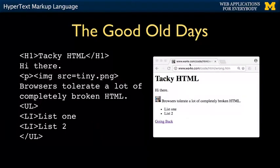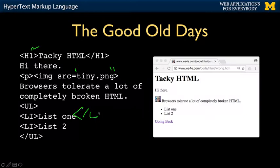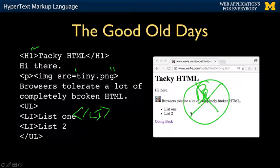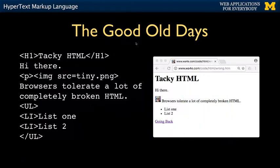In the good old days, HTML was really tolerant — it just didn't matter. You could have tags that didn't finish, uppercase tags, attributes without double quotes, no closing slash on list items. In the old days, browsers wanted to be friendly. They didn't want to show broken pages. A lot of HTML was built by hand and people would make mistakes, and the browsers wanted to fix those mistakes and show relatively simple code.